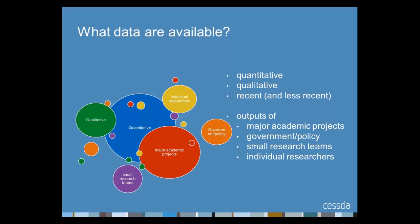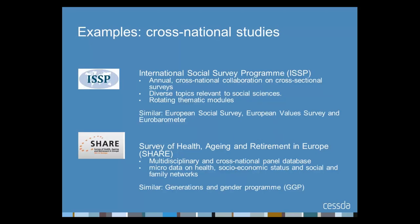The range of data available is diverse. Many services have both quantitative and qualitative data in their collections, with quantitative data from social surveys being the most prevalent. Data can come from major academic projects designed with data sharing in mind, but national data services also provide access to data from governments, policy-focused organisations, smaller research teams and individual researchers. Factors such as extending the benefits of research investment and making research transparent are supporting trends towards greater archiving and sharing of data.